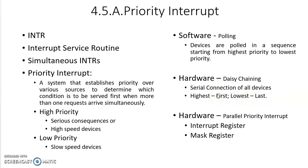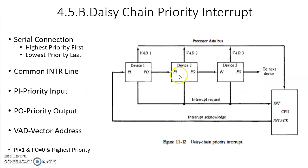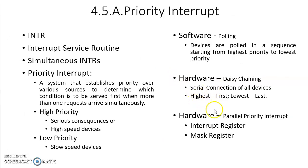Each and every device will be checked whether it has sent the interrupt request or not. It is exactly similar to the polling method — the only difference is polling is executed using software and daisy chaining is executed using hardware. Before looking at daisy chaining, let us see the other hardware method, which is parallel priority interrupt.